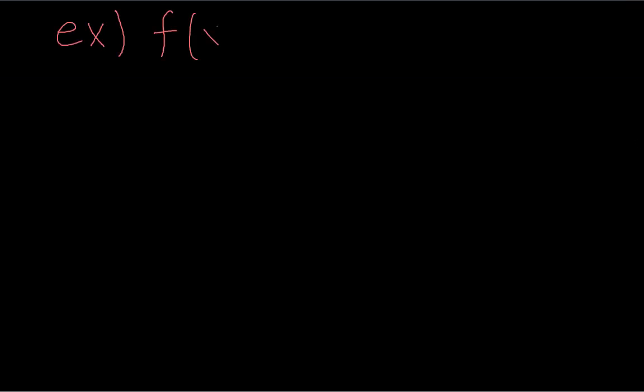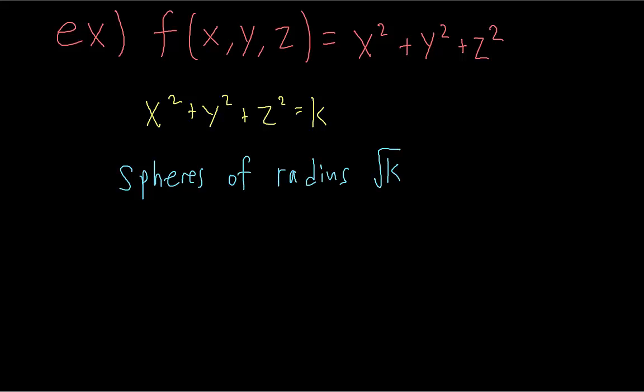Say that we have this function here, the input is three variables. Each point in the input lives in three-dimensional space. If we wanted to make a graph of this function, it would be in four dimensions because we would need four coordinate axes. One axis for each input, x, y, and z, and then one for the output variable. Obviously, we can't really draw a four-dimensional graph, but we can draw the level curves because if we set the output equal to a constant k, the level surfaces are just spheres of radius square root of k. If we were to walk along any of these spheres, the value of the function is not changing until we jump to a new sphere.